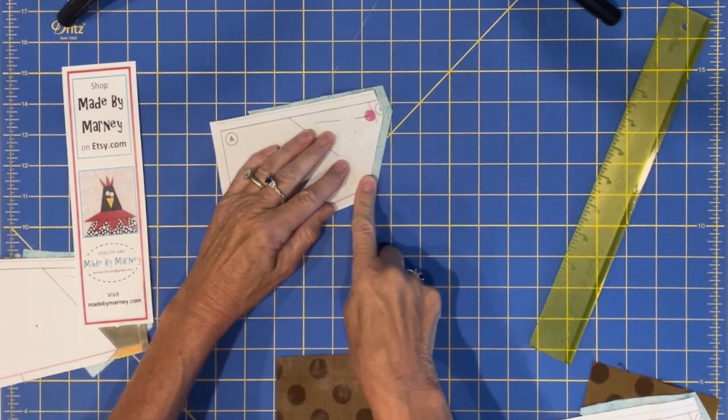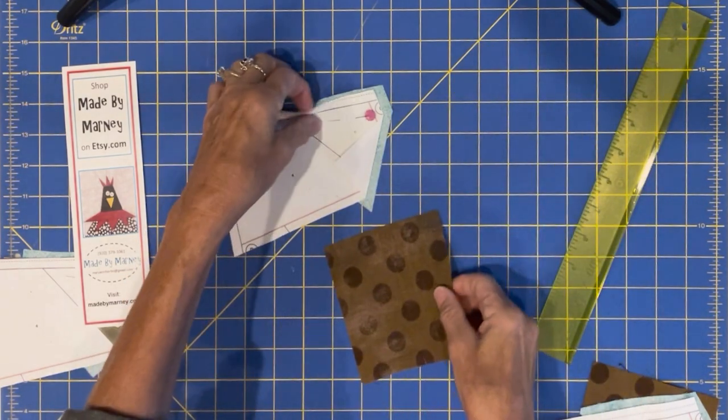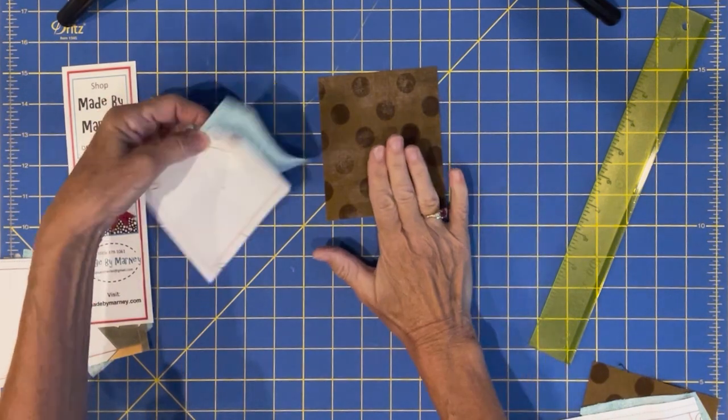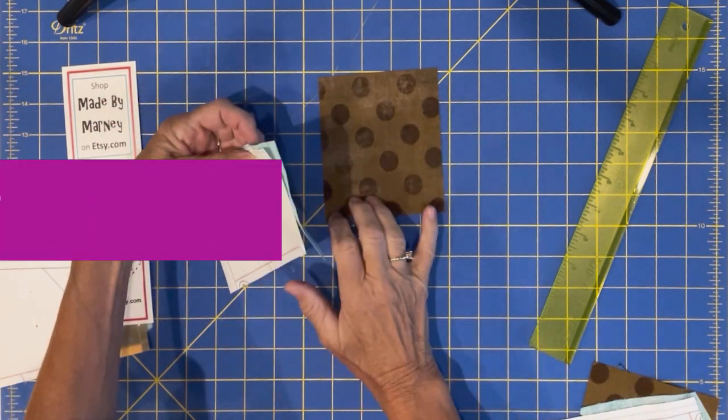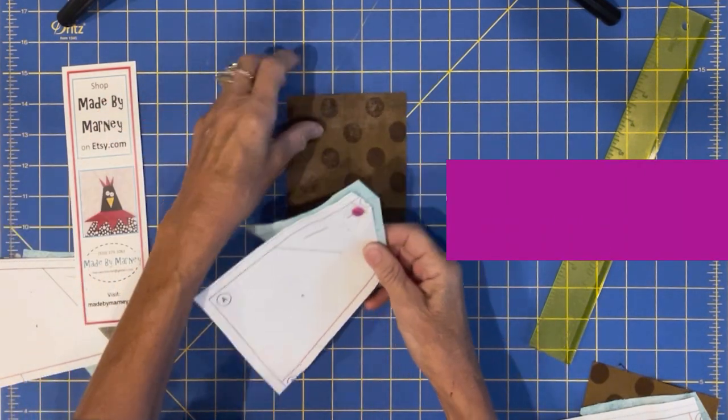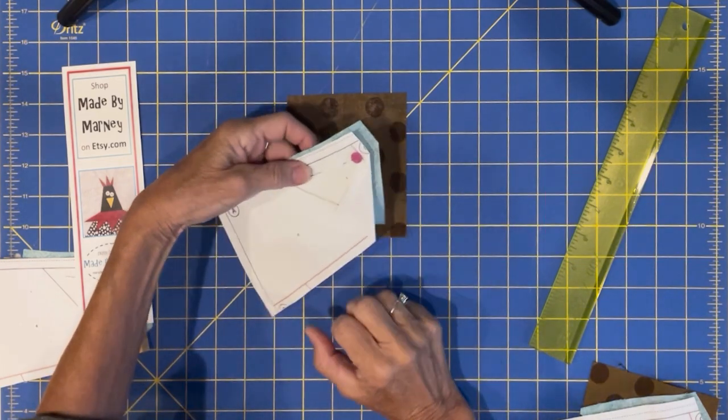Now I'm ready to start piece two. It's going to be in this brown fabric. I'm going to put right side to right side and here is the biggest, most helpful tip I can give you.